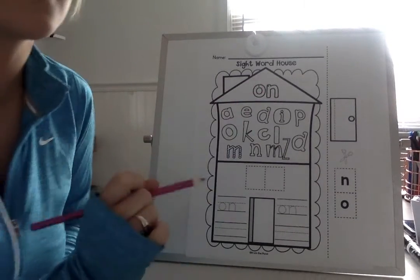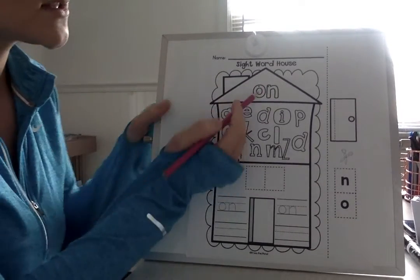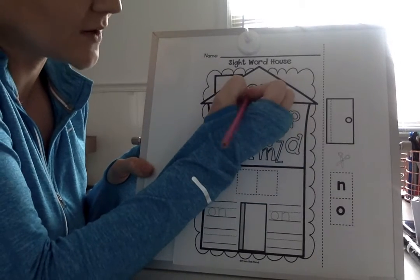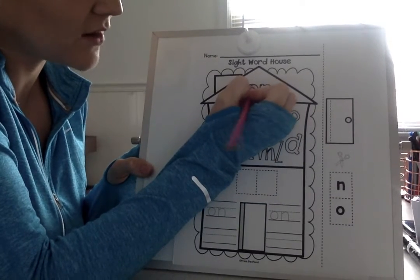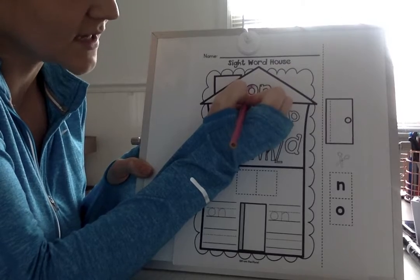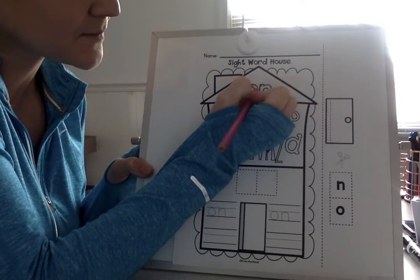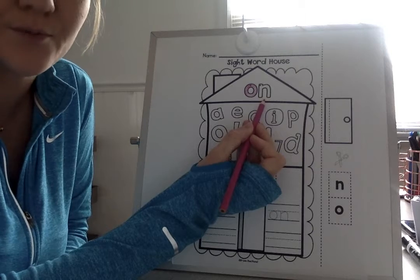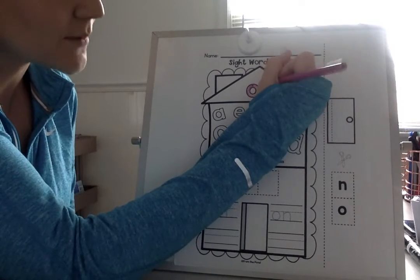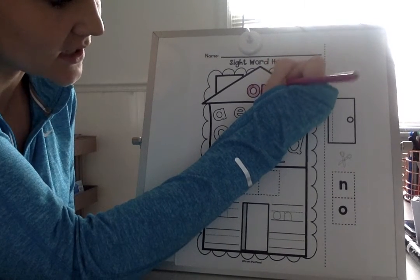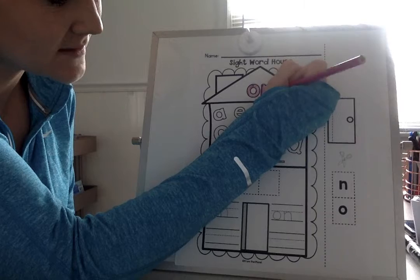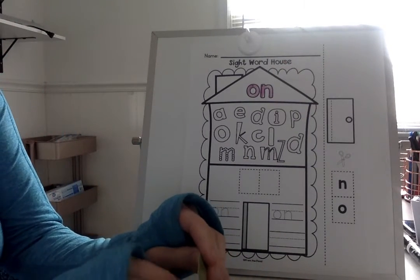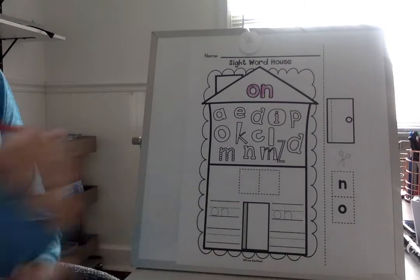First thing we're going to do is we're going to color the letters in. So what's the first letter in the word on? O. Very good. So I'm going to color in the O — I'm going to really try to stay inside the lines. And what's the next letter? N. Very good. So I'm going to go ahead and color in the letter N. Now I'm going to change, get a new color, keep it fun, keep it bright.